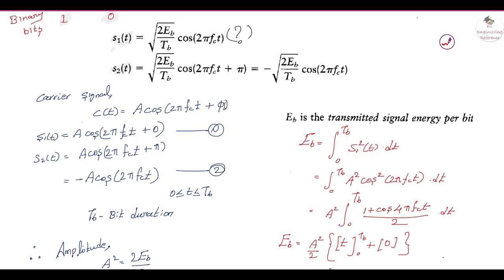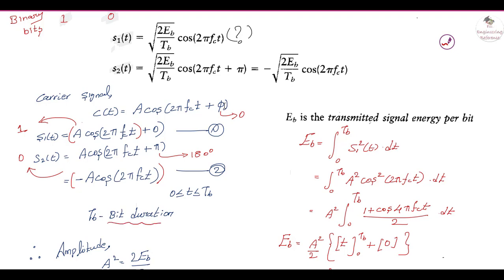For information bit 1, the carrier phase angle is taken as 0, so s1(t) is the carrier as-is. To transmit information bit 0, s2(t) has the carrier phase angle set to 180 degrees. Since A·cos(2πfc·t + 180°) = −A·cos(2πfc·t), the positive term A·cos(2πfc·t) represents symbol 1 and −A·cos(2πfc·t) represents symbol 0, over the interval 0 ≤ t ≤ Tb, where Tb is the bit duration.